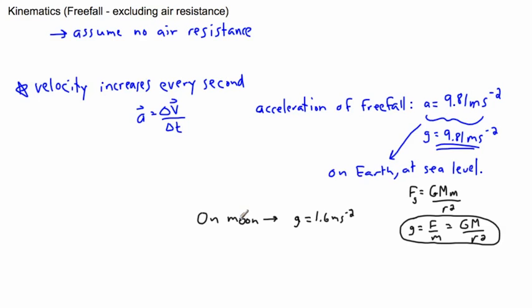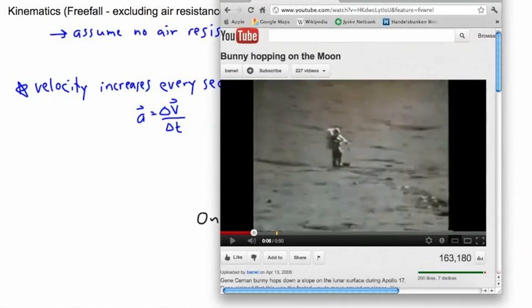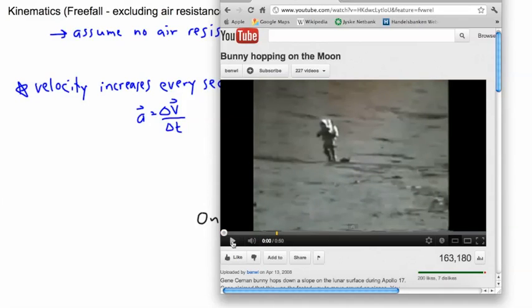You can't really get in a plane, jump out, and assume you have no air resistance. You always have air resistance in real life. But if you go somewhere else like the moon, that's a place where humans have been. I found this YouTube video - bunny hopping on the moon.